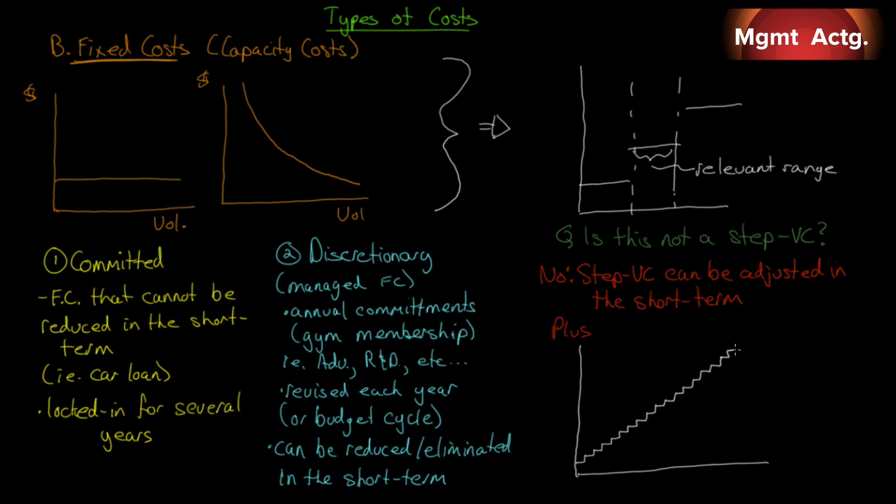Now let's extend that relevant range down. The fixed cost in that relevant range is a straight line. This is an inclined line. You see? The step variable cost has much smaller steps than the fixed cost over relevant ranges.